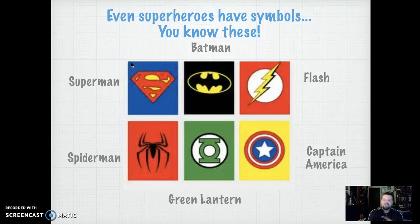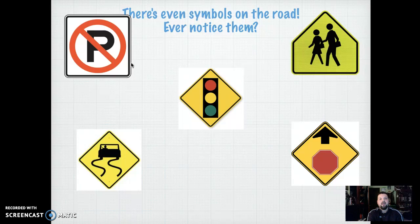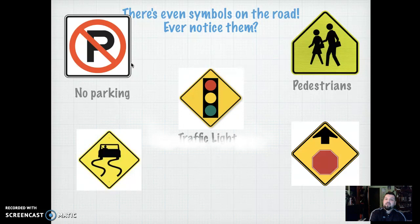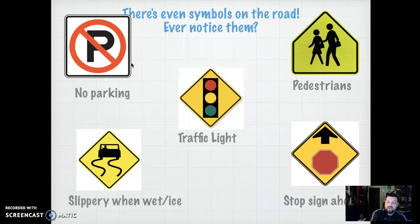How about on the road when you're driving? Well, you're not driving because you probably don't reach the pedals yet. But symbols on the road — when your parents drive, that means no parking. What about this one in the middle? Pedestrians. The one on the right means people walking. The one in the middle, that's a traffic light. How about the ones on the bottom? You ever seen those? That means stop sign ahead. And what about this one with the lines? You know what that one means? Slippery when wet and there might be ice.